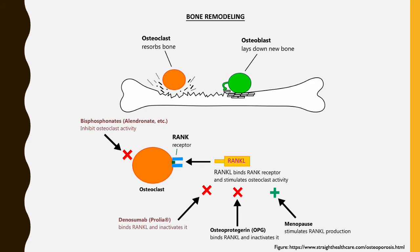Bone mass is usually stable in healthy premenopausal individuals. As estrogen levels decline around menopause, bone resorption by osteoclasts increases and then exceeds the ability to form new bone by osteoblasts. This leads to bone loss and loss of microarchitecture of both trabecular and cortical bone, which increases the risk of fracture. Bone mass may begin to decrease before menopause, with an accelerated phase of bone loss during the menopausal transition.